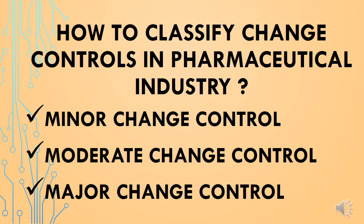Welcome to FarmGrow. In this presentation we will see the classification of change controls raised in the pharmaceutical industry. Broadly, change controls raised in the pharmaceutical industry are classified into three main categories: minor change control, moderate change control, and major change controls.